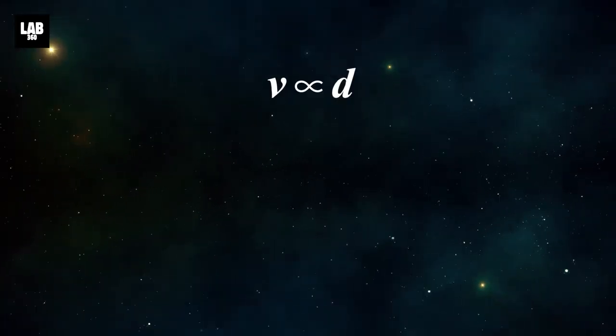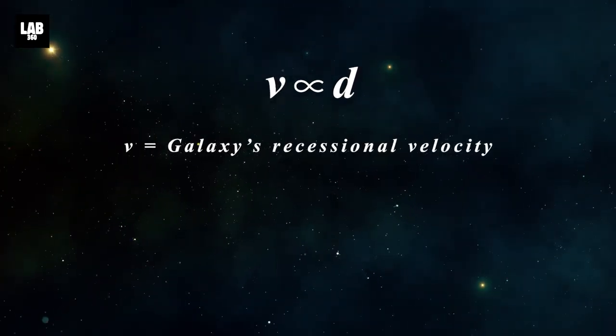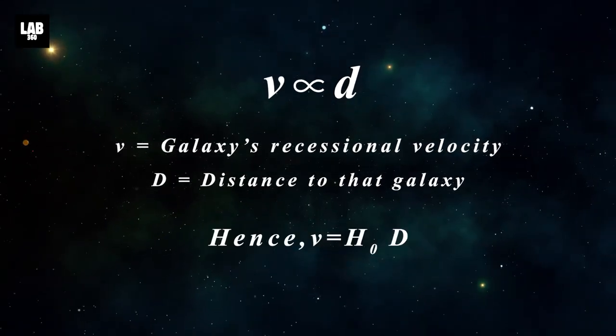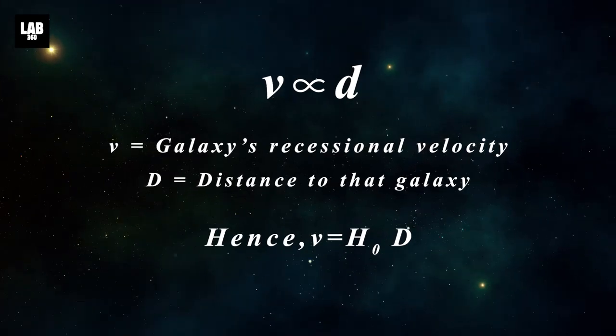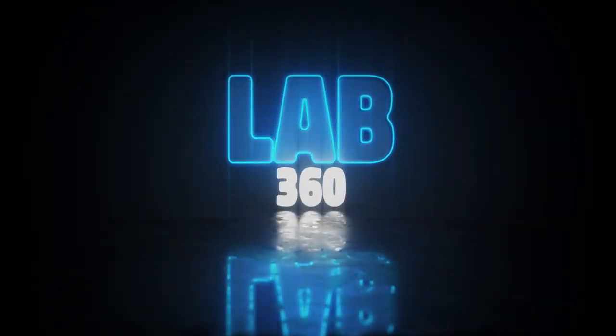V is directly proportional to D, where V is the galaxy's recessional velocity and D is distance to that galaxy. This led to the birth of the most disputed numbers of astronomy. Welcome to Lab 360, because together we will explore.